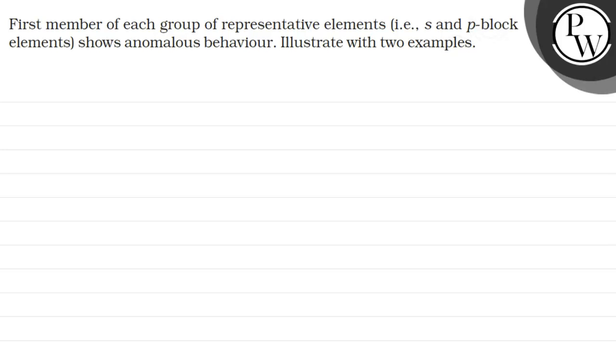Hello, let's read the question. The question says: First member of each group of representative elements, that is s and p block elements, shows anomalous behavior. Illustrate with two examples.